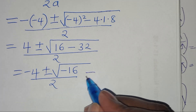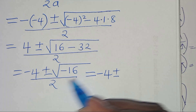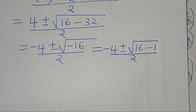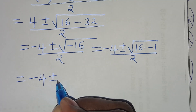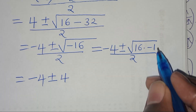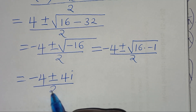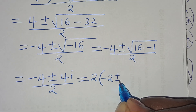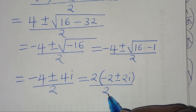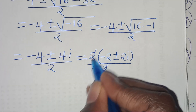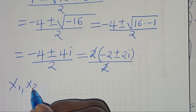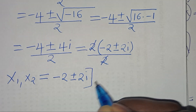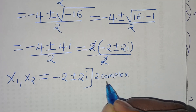We express the square root of negative 16 as the square root of 16 times negative 1, which equals 4i. So we have 4 plus or minus 4i over 2. Factoring out 2 gives (2 plus or minus 2i) over 2, which simplifies to x₁, x₂ equals negative 2 plus or minus 2i. These are two complex solutions.